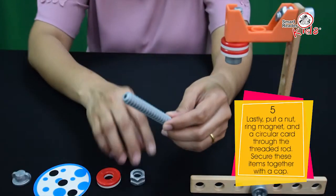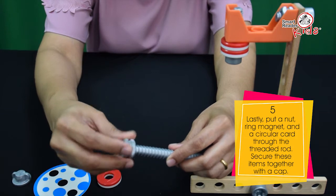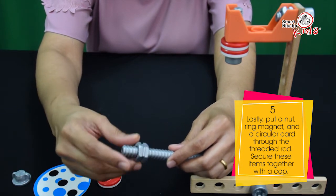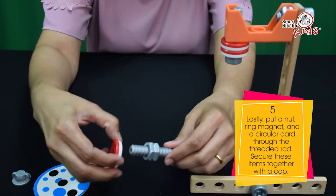Lastly, put a nut, ring magnet, and a circular card through the threaded rod. Secure these items together with a cap.